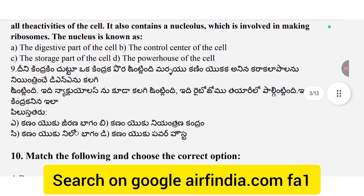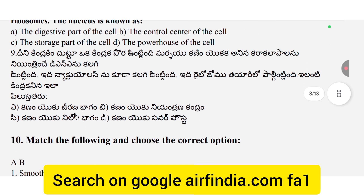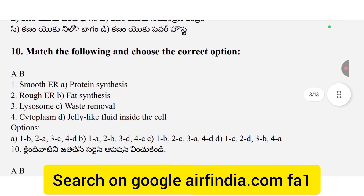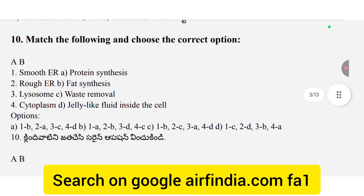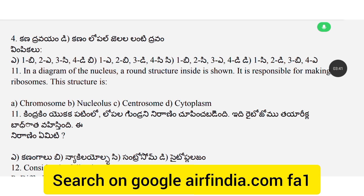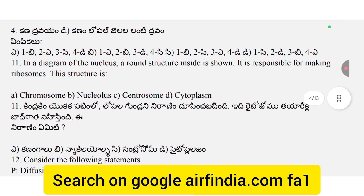There are four options; choose the correct one. Question 10: Make the following and choose the correct options. If you want to download this question paper PDF, go to Google and search airfindia.com FA1 to download your PDF. Question 11: In a diagram of the nucleus, the structure inside responsible for making ribosomes is which structure?